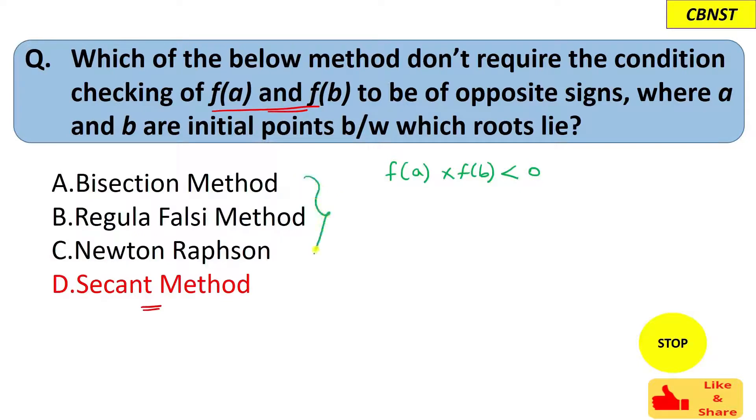This condition actually says that f(a) multiply f(b) should be less than zero. All these three methods need this condition to be true. Let's say the function is f(x), a is this point and b is this point. If f(a) is a negative value and f(b) is this one, that means this is a positive value.